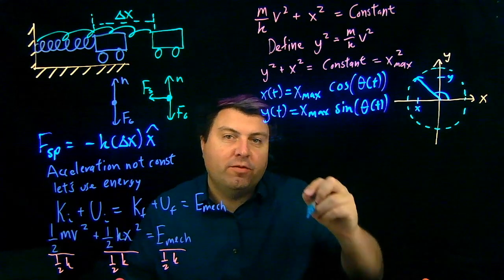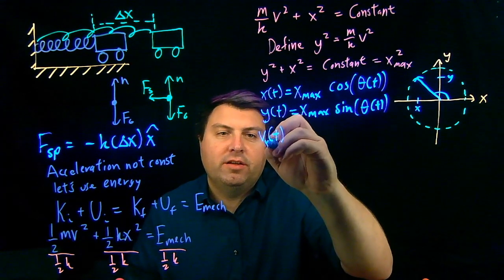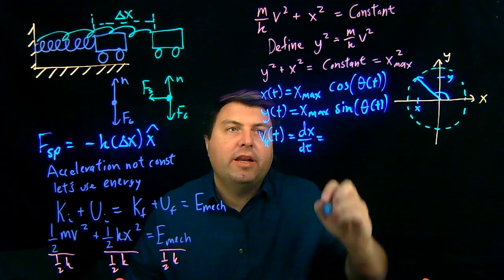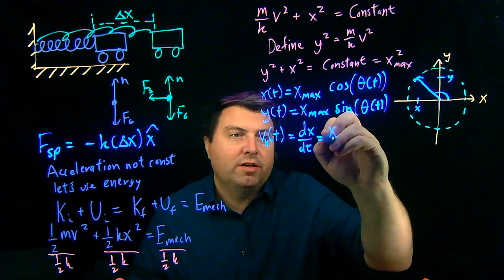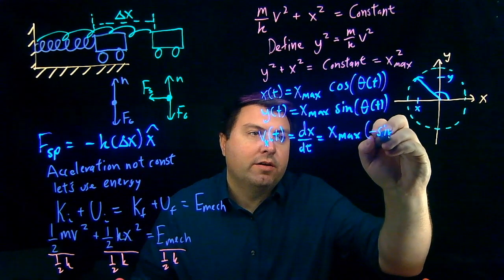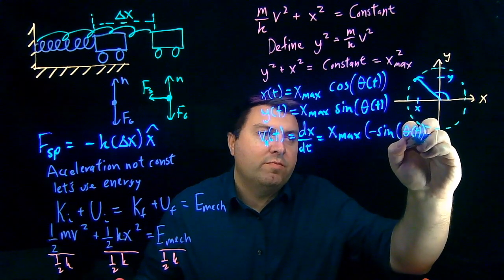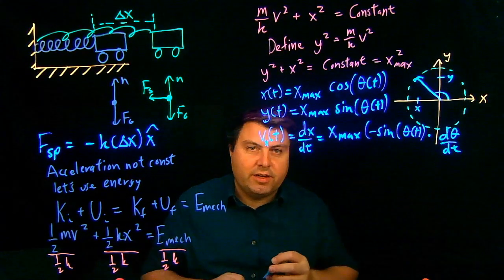Well, if I know x of t and y of t, I can say that my v of t in the x direction is dx dt, and I can take the derivative of this. Well, the derivative of this is going to be x max negative sine of theta of t times d theta dt.